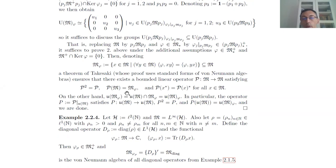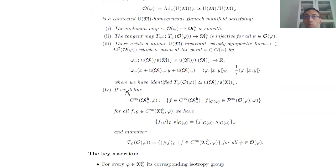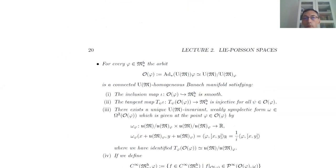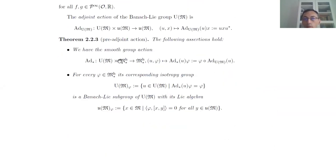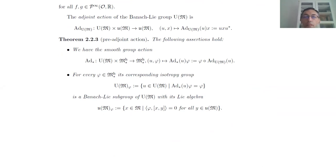I will stop here. In the third lecture we will build a symplectic groupoid with the space of units being this Poisson space that we studied today. So in a way we go one step further in the direction of Poisson geometry. Thanks again for listening so patiently.